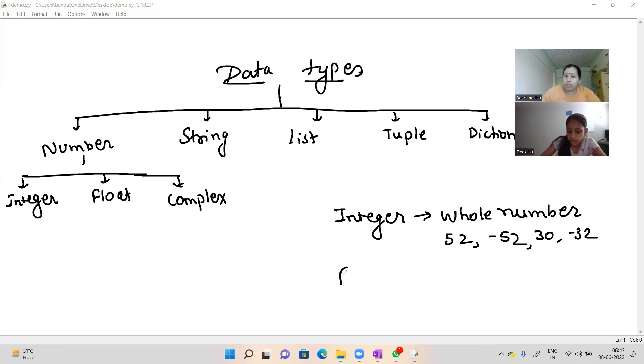Float means what? And this is for data type is for your decimal number, just like 52.56, minus 52.62 like this.